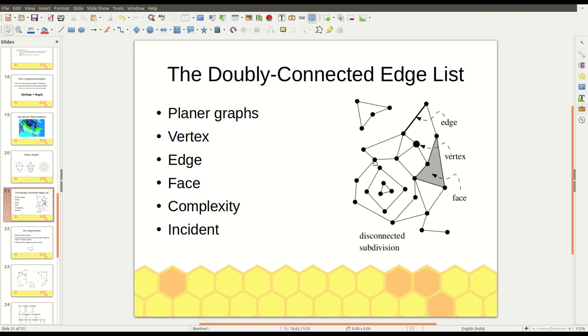a vertex and an edge which is starting from it or which is ending at it are incident. In the same way, this edge and this face is incident. This edge and this face is incident. This edge and this face is also incident. So a face which is bounded by a face and any one of its bounding edges are also called incident.